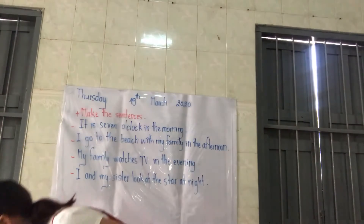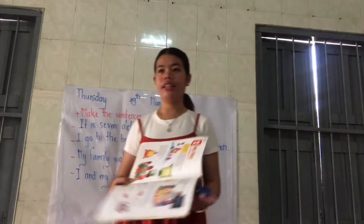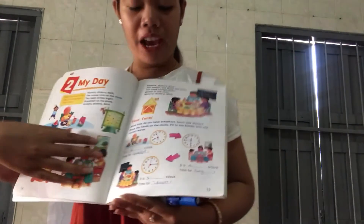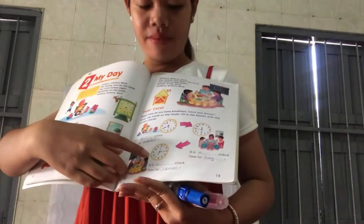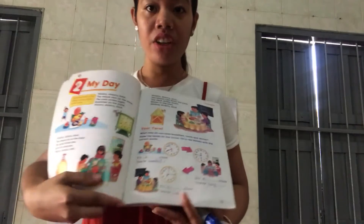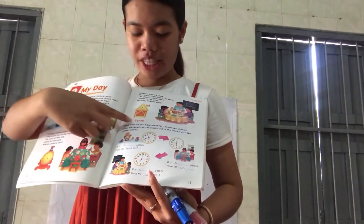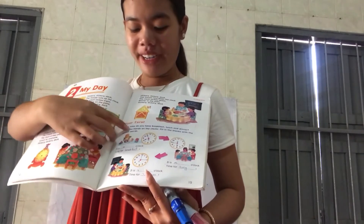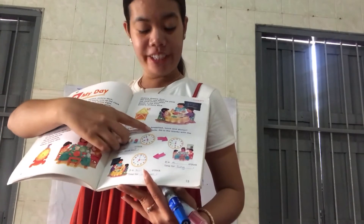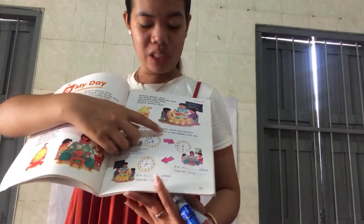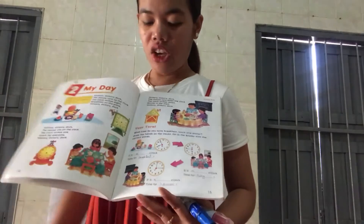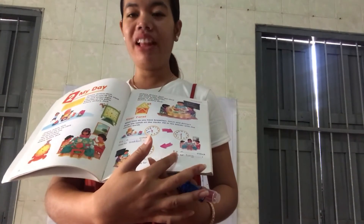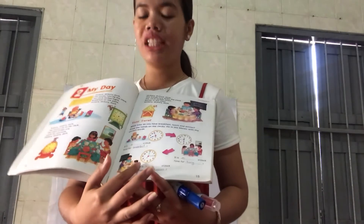Here is my exercise that you need to do for me. Please go to page 15. What time do you have breakfast, lunch, and dinner? Draw the hands on the clock. Fill in the blanks with the correct words. You need to complete what time do you have breakfast, what time do you have lunch, and what time do you have dinner.